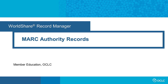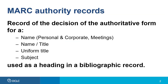Hello, everyone. This video will discuss the basic structure and purpose of MARC authority records. An authority record is a record of the decision of the authoritative form of a name, a name title, uniform title, or subject used as a heading in a bibliographic record.